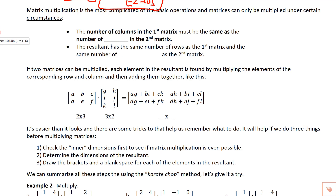Of all the operations covered, multiplication is the most important since it's the new skill we'll apply later in this unit. Matrices can only be multiplied under certain circumstances: the number of columns in the first matrix must equal the number of rows in the second matrix — the inner dimensions must be the same. The resultant has the same number of rows as the first matrix and the same number of columns as the second.